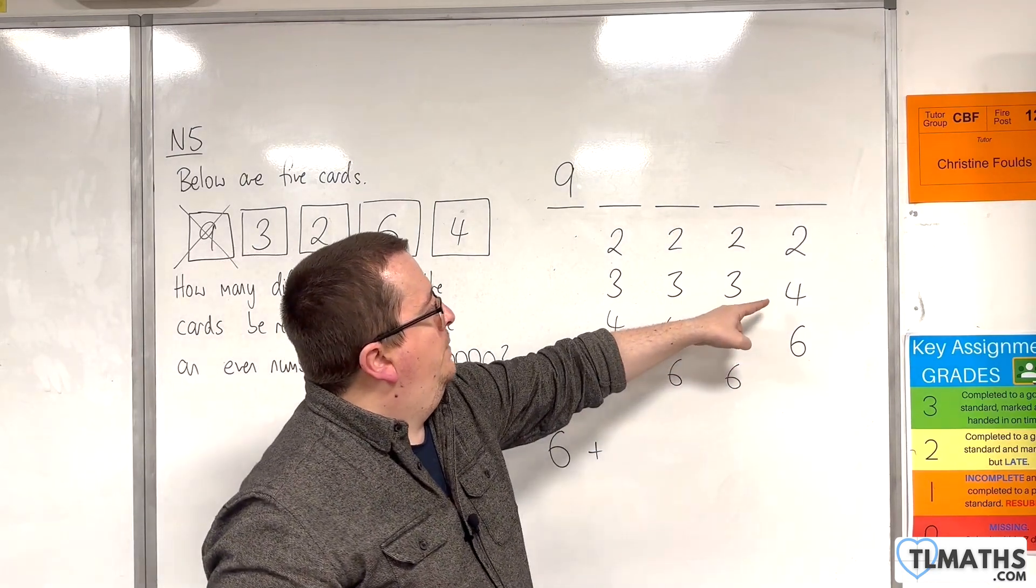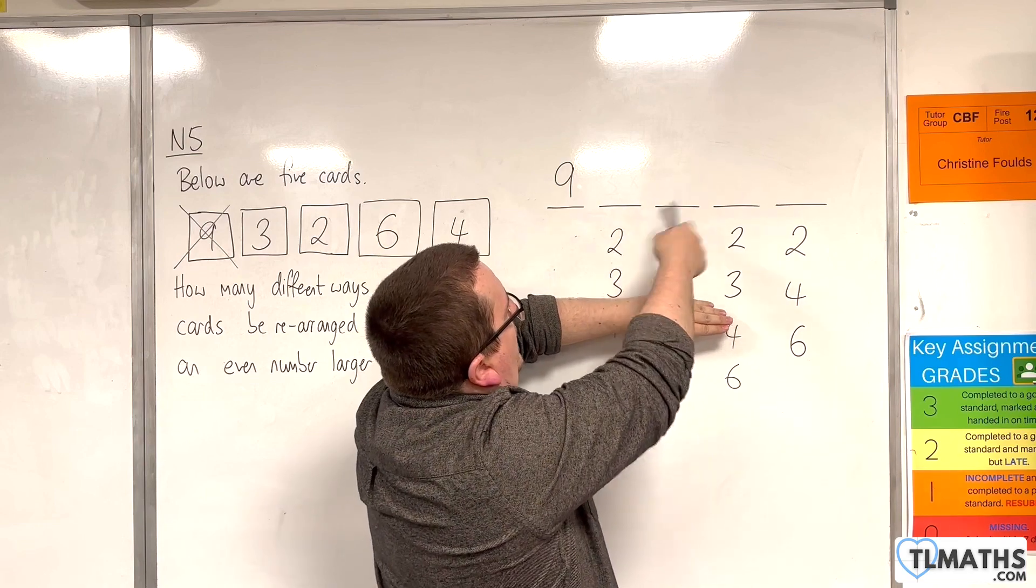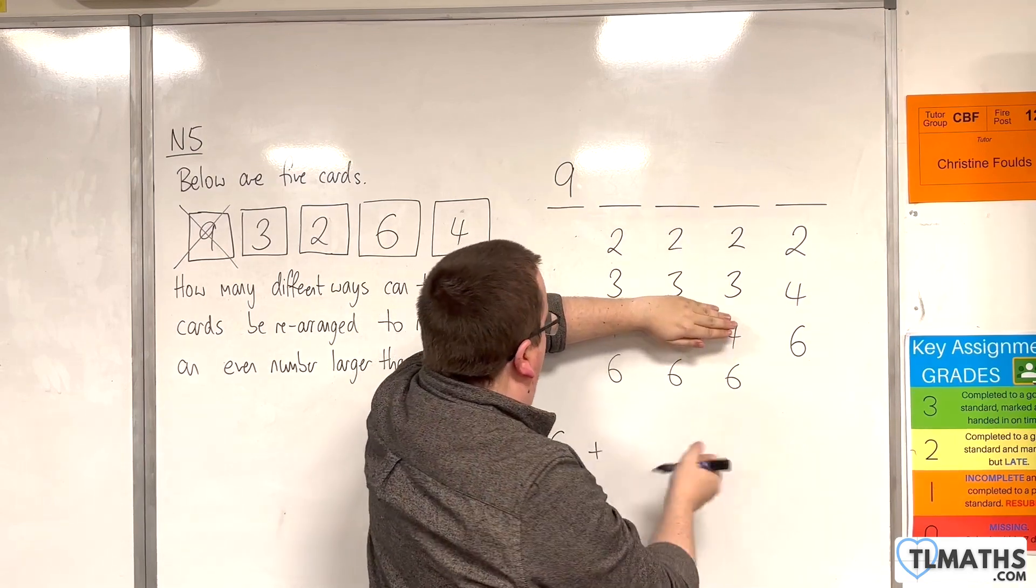If we choose the 4, then the 4s have gone. And the 2s, 3s, and 6s can come in any combination there. And there's 6 of those.